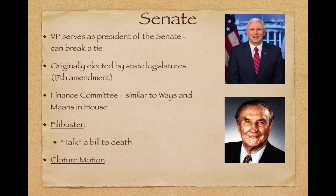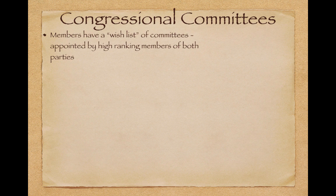The cloture motion is another important term — it will end a filibuster when 60 members of the Senate agree to end it. So a filibuster is only effective until 60 members vote to end it.